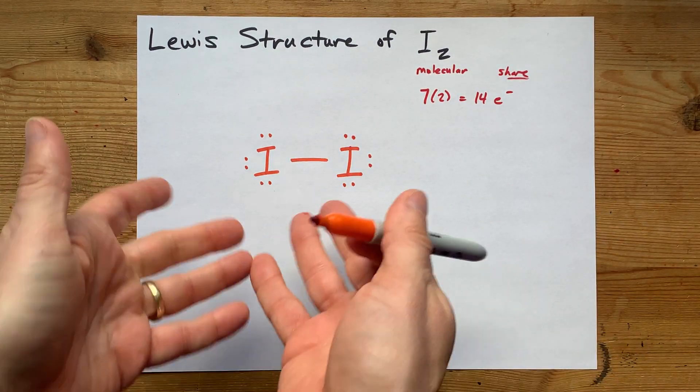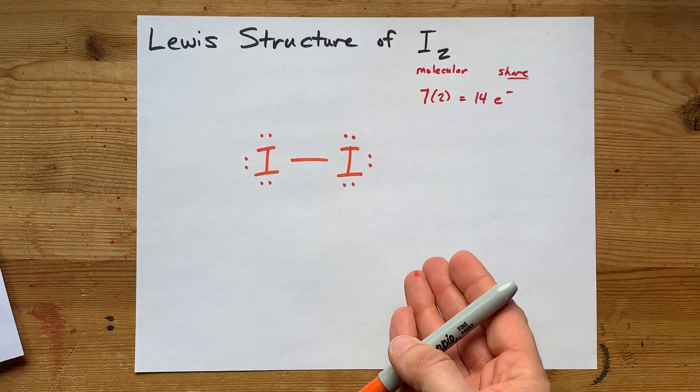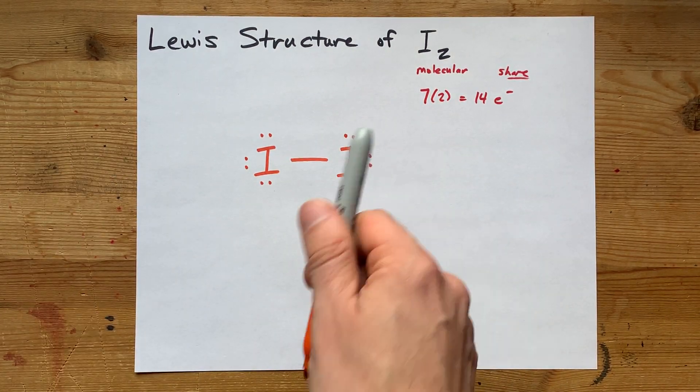And I have the right number of electrons. This is it. I'm done. I've drawn the Lewis structure for I₂. I hope you had a blast doing it, because I sure did. And best of luck.